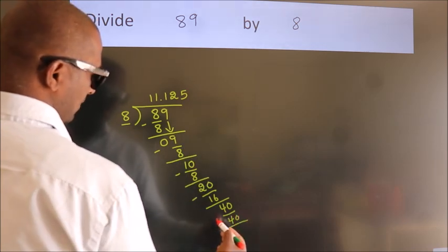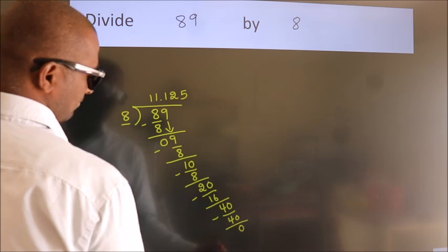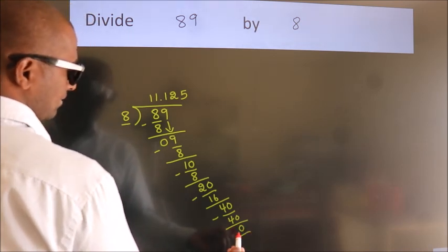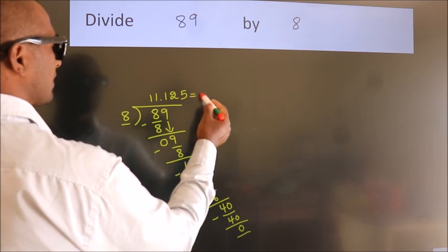Now we subtract. We get 0. Here we got remainder 0. So this is our quotient.